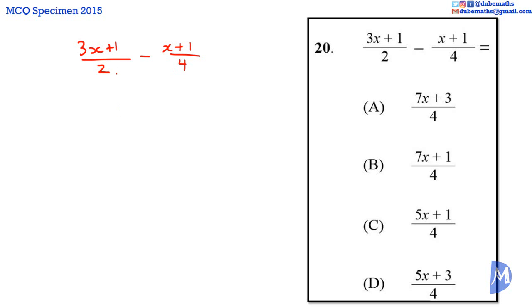To make the first fraction a fraction over the LCM we have to multiply the denominator by 2. 2 multiplied by 2 is equal to 4. We have to multiply the numerator by 2 as well to keep the fraction equivalent. This is equal to multiplying both the numerator and the denominator by 2.